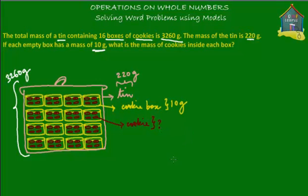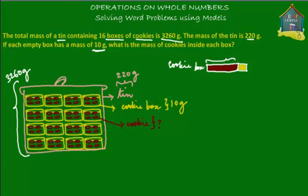Now that we understand what's inside what, let's make a model diagram. The brown part is your cookies and the yellow part is your empty cookie box. Together, this is a cookie box. Just the cookies part is the mass we don't know, and the yellow empty box is 10 grams. There are 16 of these inside one tin. The tin — our pink part — has a mass of 220 grams.